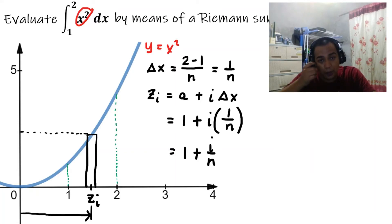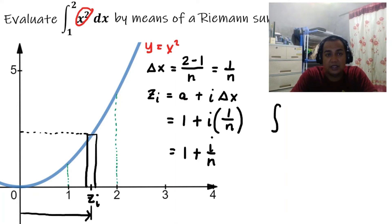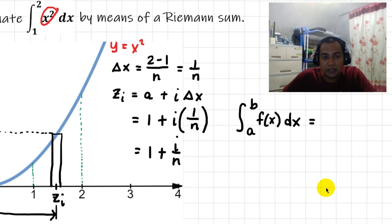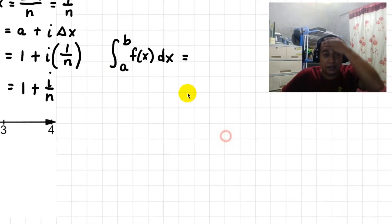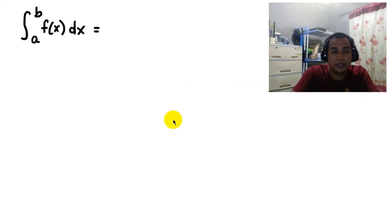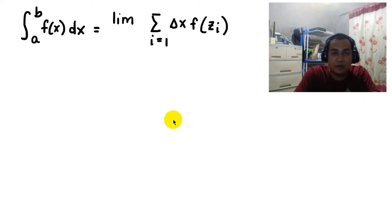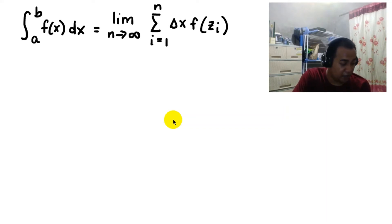Going back to the definition of a definite integral: the integral of f(x) dx from a to b equals the limit as n approaches infinity of the summation from i equals 1 to n of delta x times f(z sub i). That is our definition of the definite integral.